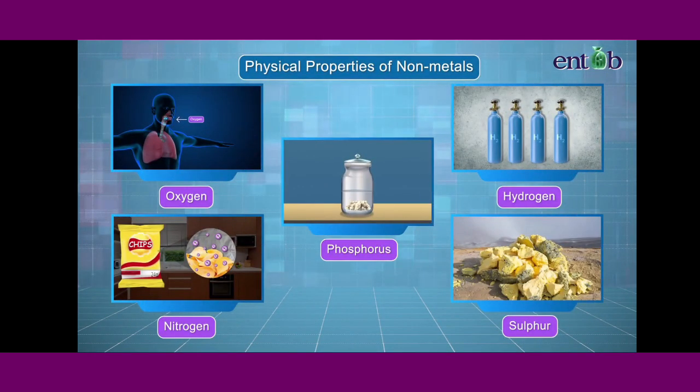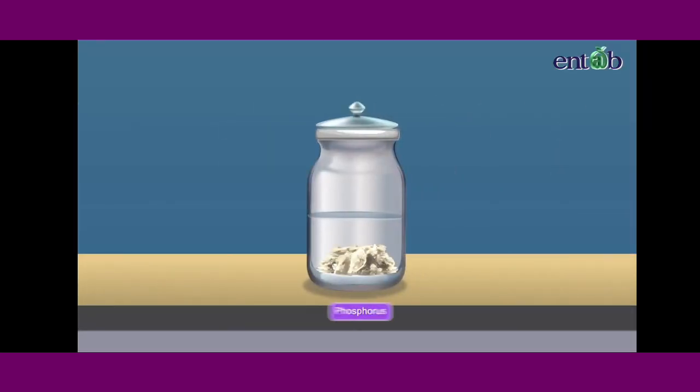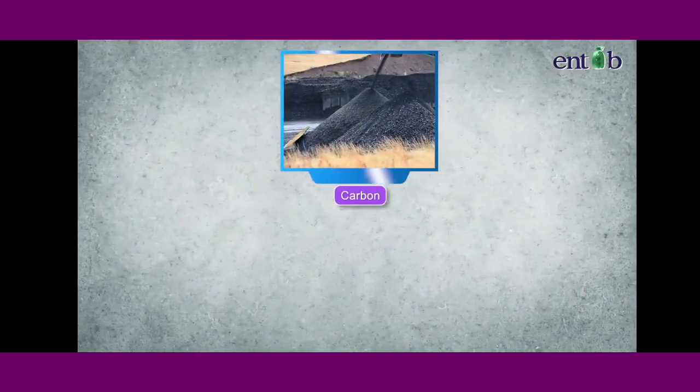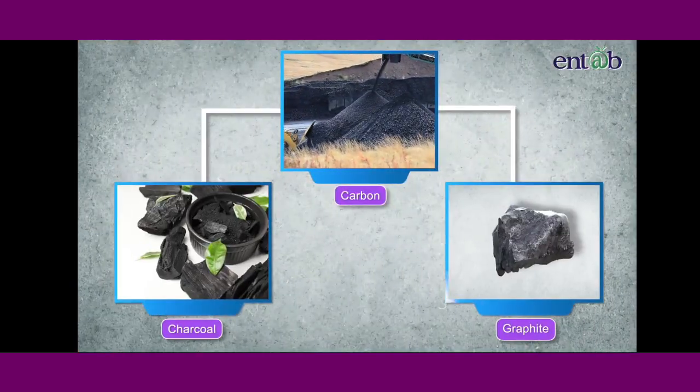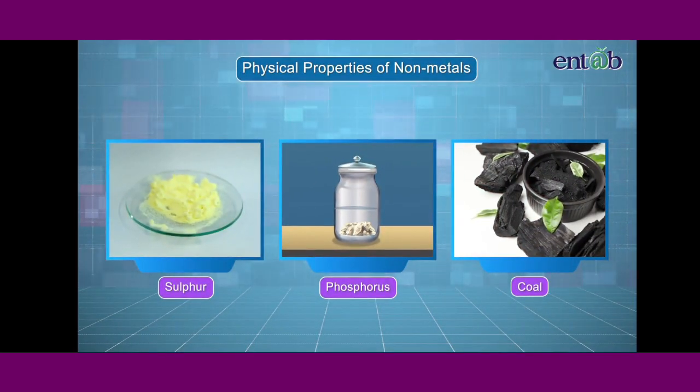Let us now learn about the important physical properties of nonmetals. For this, first collect samples of a few nonmetals like sulfur, iodine, phosphorus, and carbon which is present in the form of charcoal or graphite. Look at their surfaces carefully.